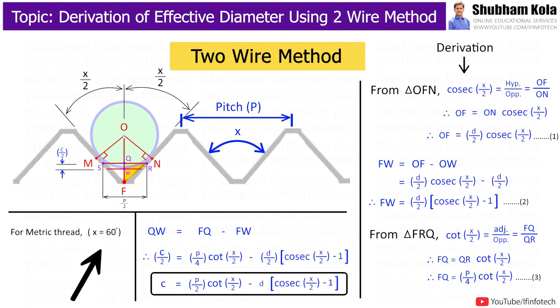Now, for metric thread, we know the angle of thread, that is alpha, which is equal to 60 degrees. When we substitute angle, we get constant C is equal to 0.866p minus d, where p is the pitch of thread and d is the diameter of wire.